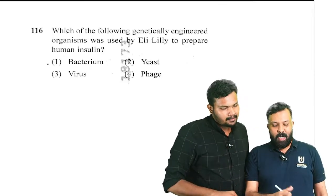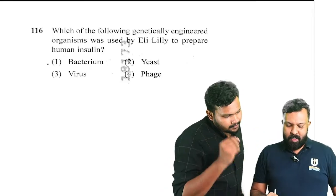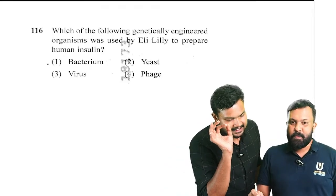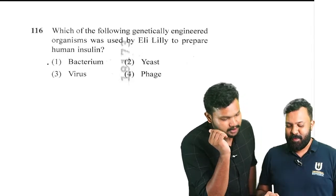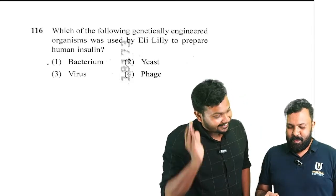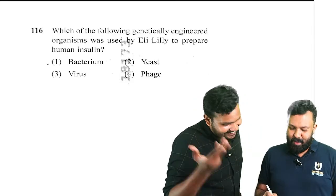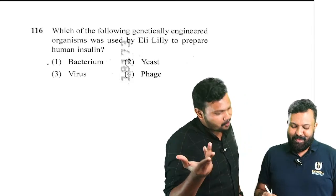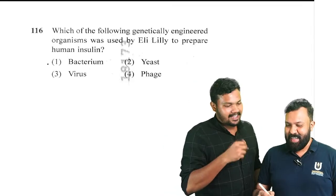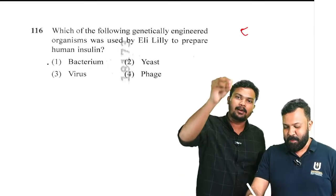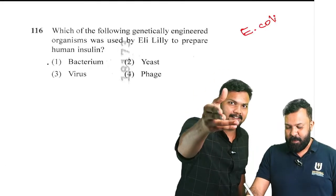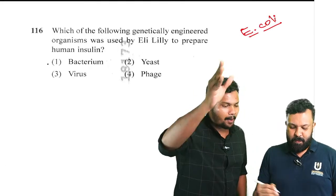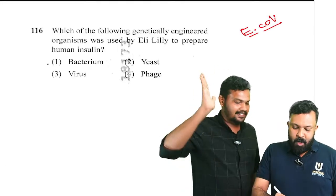Question number 116: which of the following genetically engineered organisms was used by Eli Lilly to prepare human insulin? The answer is E. coli bacteria — that is the right answer.